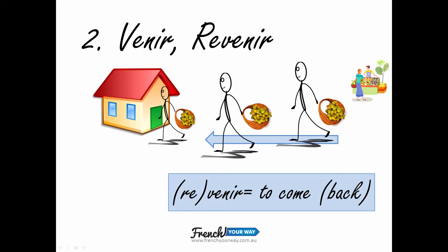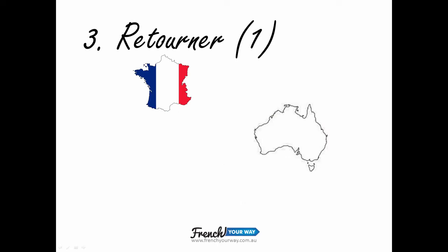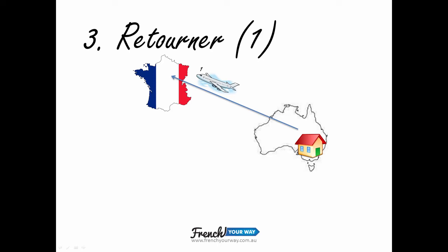What about retourner? So retourner — there will be two examples here. Here's France and Australia, and let's say that you're living in Australia, for example totally random in Melbourne, and you decide to go to France for holidays. So you fly there, and that's 'to go to France' — you will use aller there.